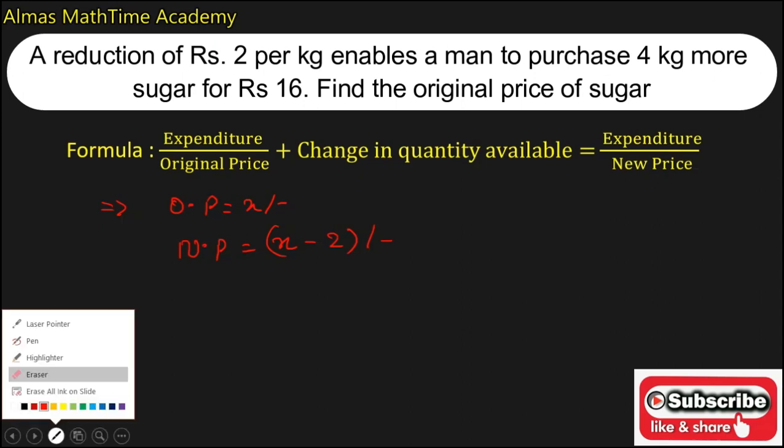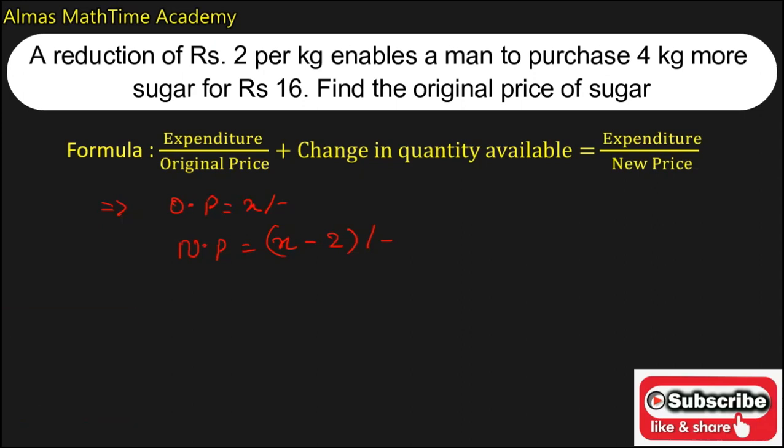Now the change in quantity will be the purchase of 4 kg more sugar, that is nothing but change in quantity is equal to 4 kg. And in the given question, a purchase of 4 kg more sugar for rupees 16 gives you the expenditure. Expenditure is equal to how much? It is 16 rupees given.